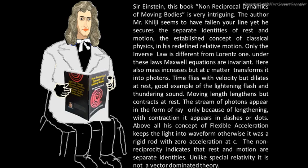Time flies with velocity but dilates at rest — a good example being the lightning flash and thundering sound. Moving length lengthens but contracts at rest. A stream of photons appears in the form of a ray only because of lengthening with contraction; it appears in dashes or dots otherwise. Above all, his concept of flexible acceleration keeps the light in wave form — otherwise it would be a rigid rod with zero acceleration. The non-reciprocity indicates that rest and motion are separate identities. Unlike special relativity, it is not a vector-dominated theory.